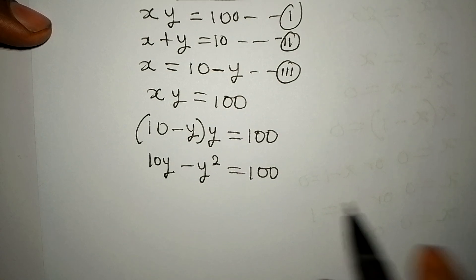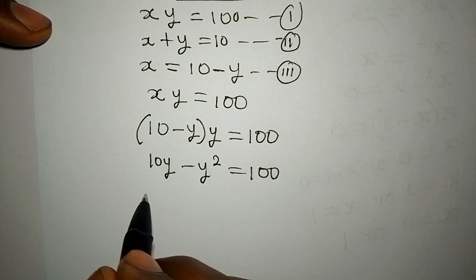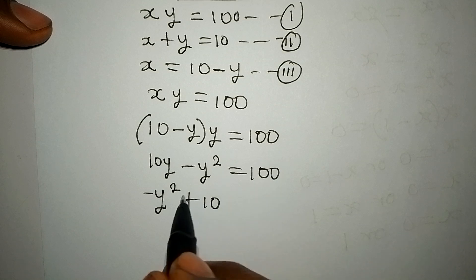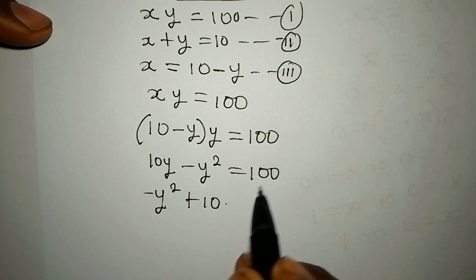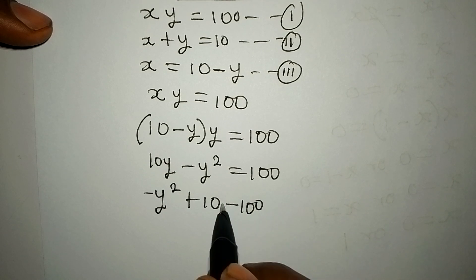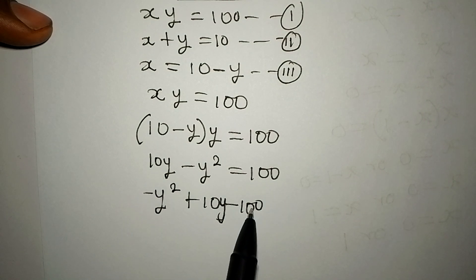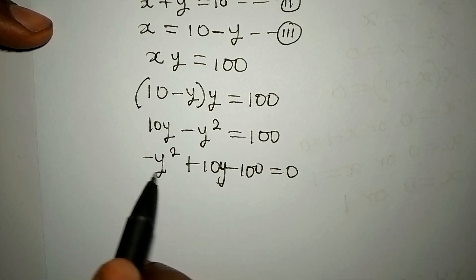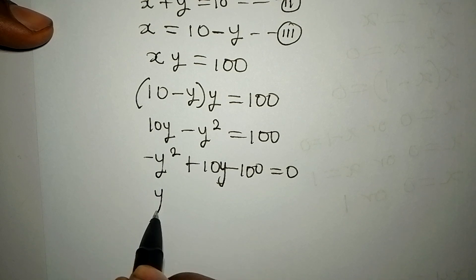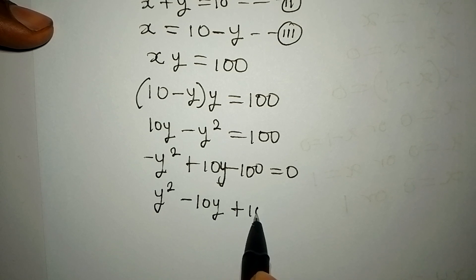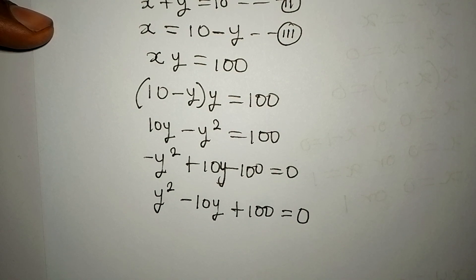Rearranging, we write minus y² plus 10y, then bring 100 to the left-hand side giving negative 100, so we have minus y² plus 10y minus 100 equals 0. Multiplying everything by negative one gives y² minus 10y plus 100 equals 0.